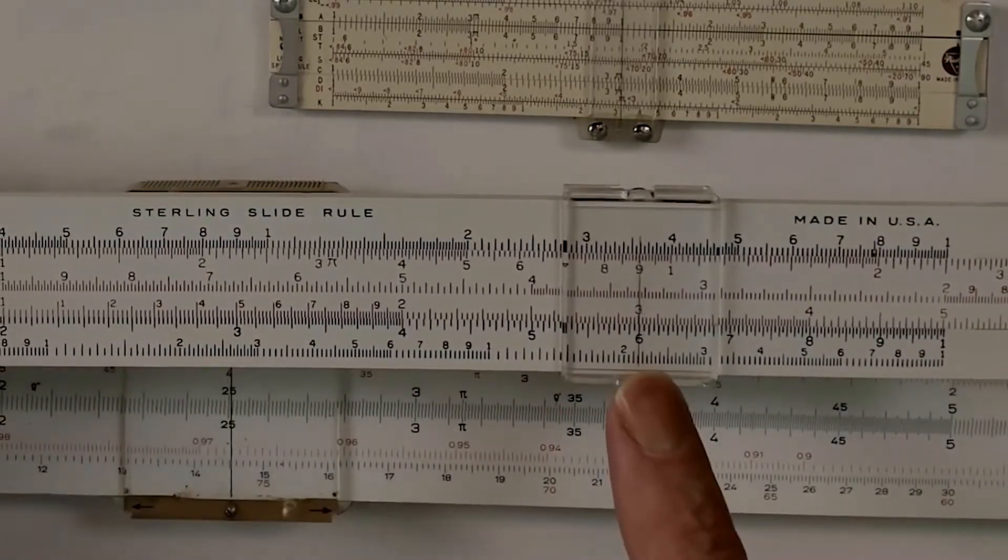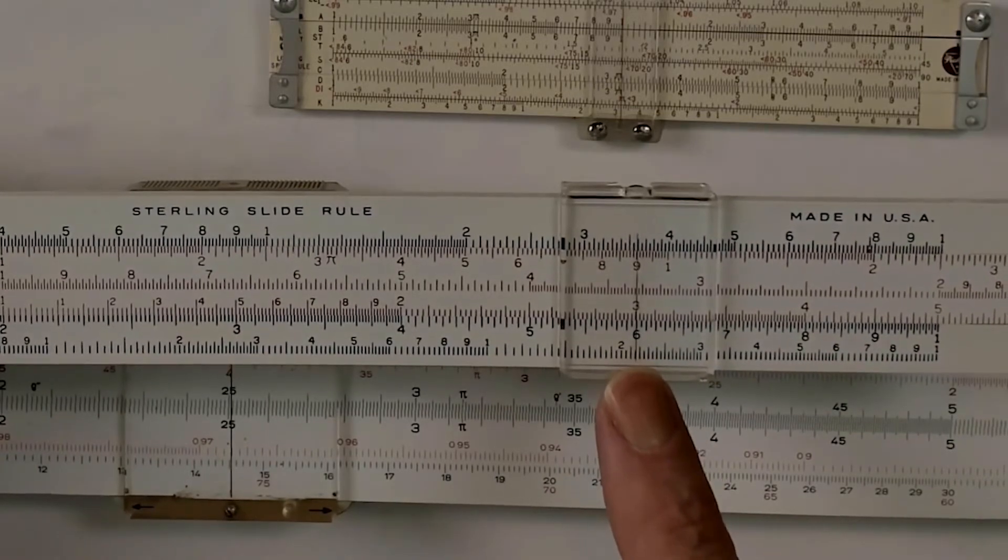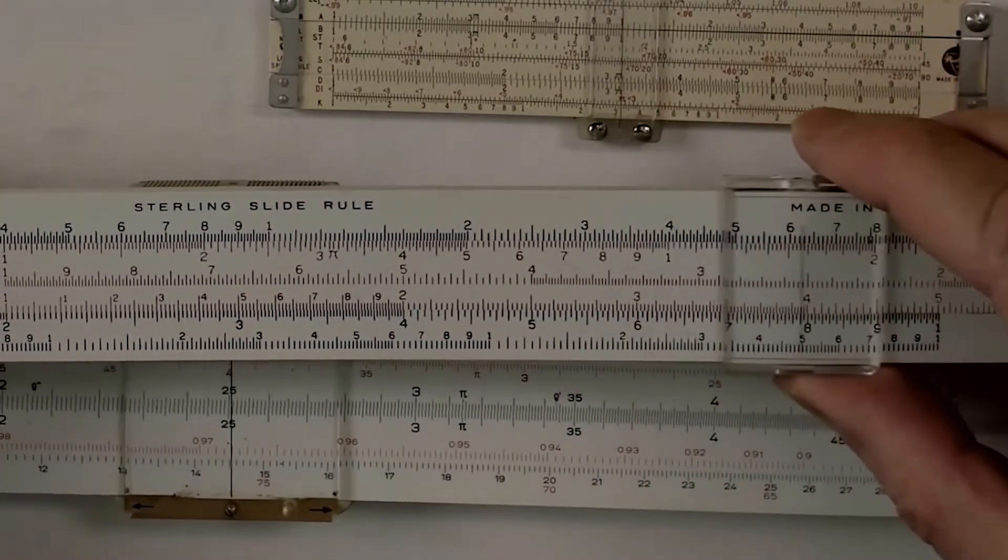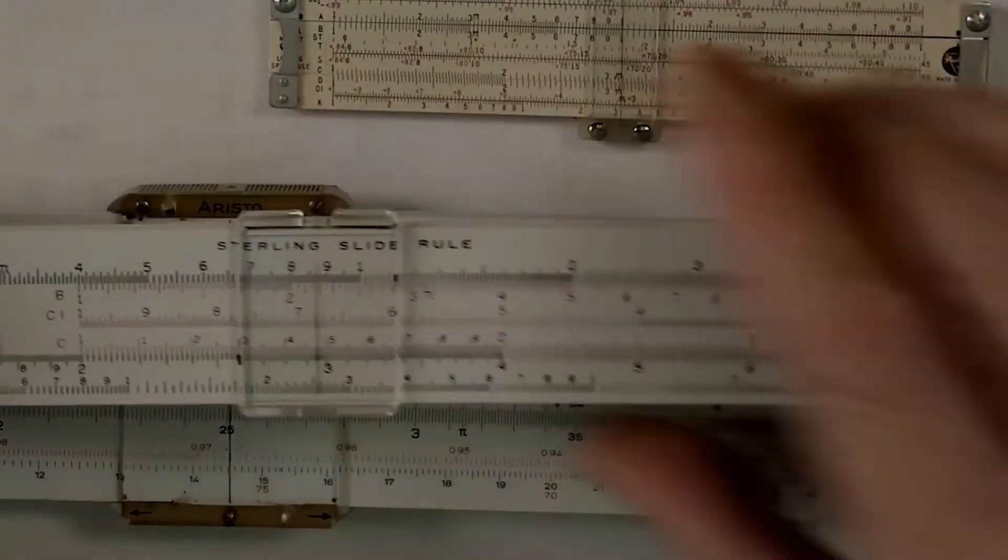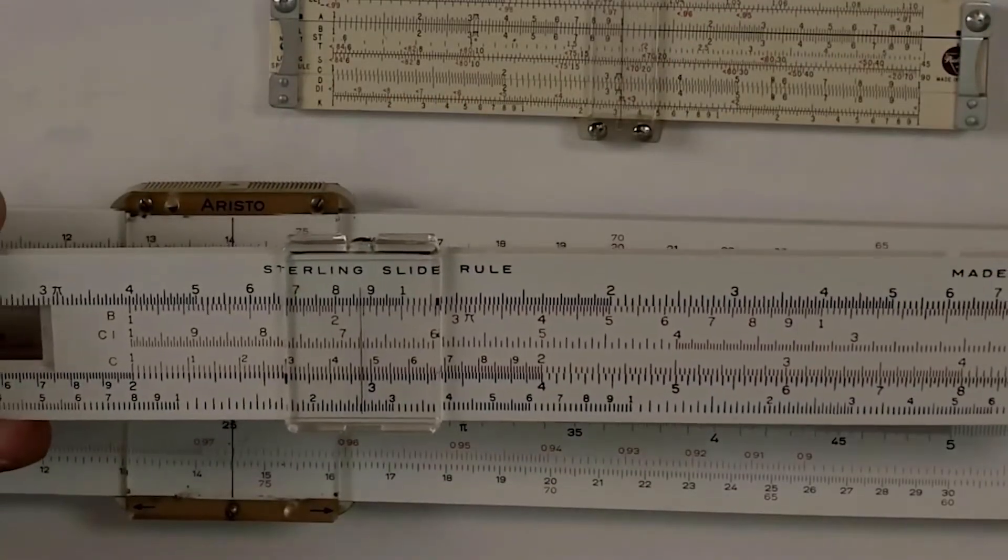Likewise, we can multiply 2 by 3 and come up with the answer of 6. For 4 by 2, there's 8. Division is exactly the opposite.